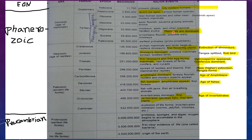Next is Quaternary period. In Quaternary period, two epochs are there: Pleistocene and Holocene. In Pleistocene, there were recent ice ages and various human species evolved. Next is Holocene epoch — this is the present climate with only modern humans. So you have to remember these major events in geological timescale.